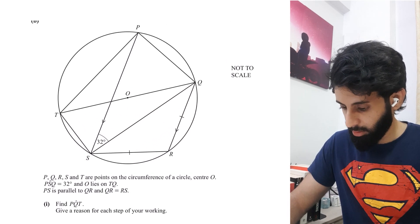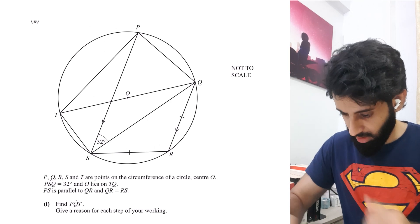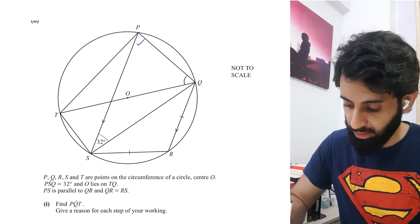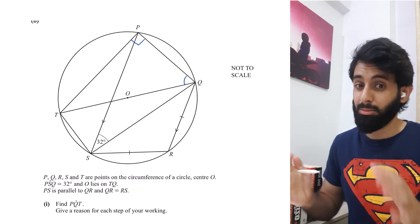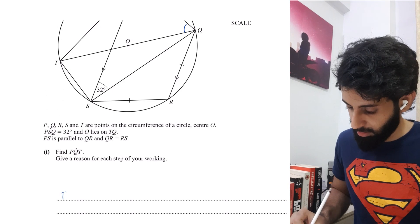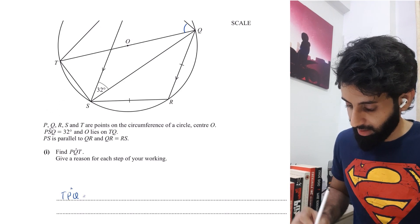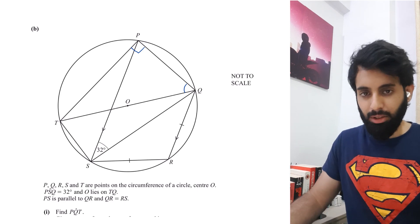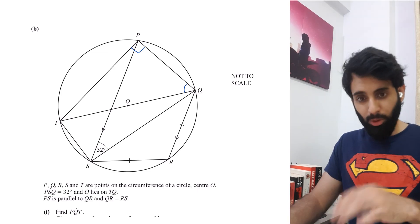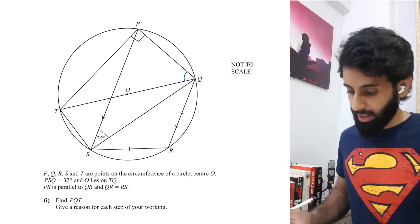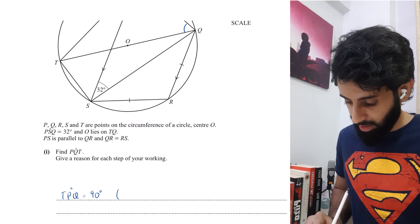First things first. This angle will be 90 degrees. Is it because it looks like 90 degrees? No. This is because it is opposite the diameter. Notice that TQ is passing through the center - I know that because it has O written on it. P is the angle opposite the diameter, so this equals 90 degrees.